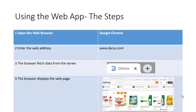Next, we will discuss how to access a web application. There are simple steps involved. Step one: open the web browser installed on your computer — such as Google Chrome, Mozilla Firefox, or Opera. Step two: enter the web address in the address bar, like www.daraz.com. Step three: the browser fetches data from the server, which takes some time. Step four: the browser displays the web page on your screen.